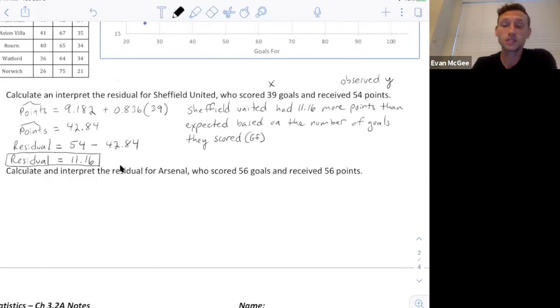In this case, a positive residual is a good thing because you ended up having more points than expected for the team. I've also put GF, just as a reminder, this is goals for the number of goals they scored.